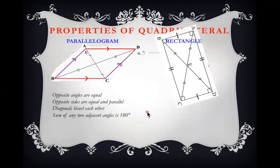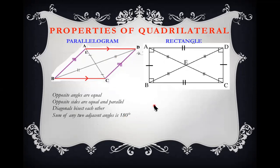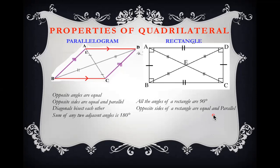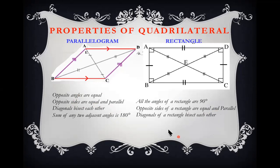Rectangle: be careful when comparing a parallelogram to a rectangle. In a rectangle, all four angles are 90 degrees. Opposite sides of a rectangle are equal and parallel, and the diagonal lines of a rectangle bisect each other.